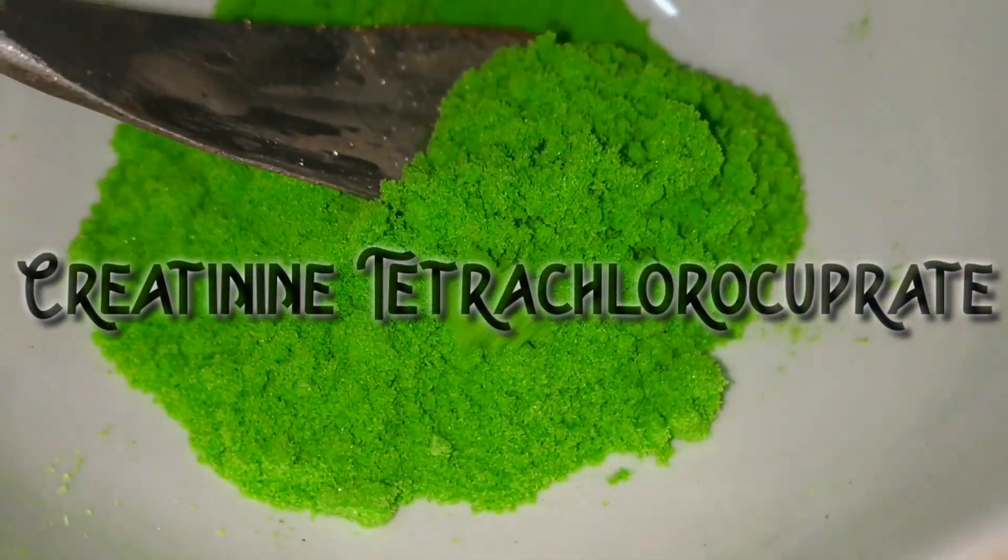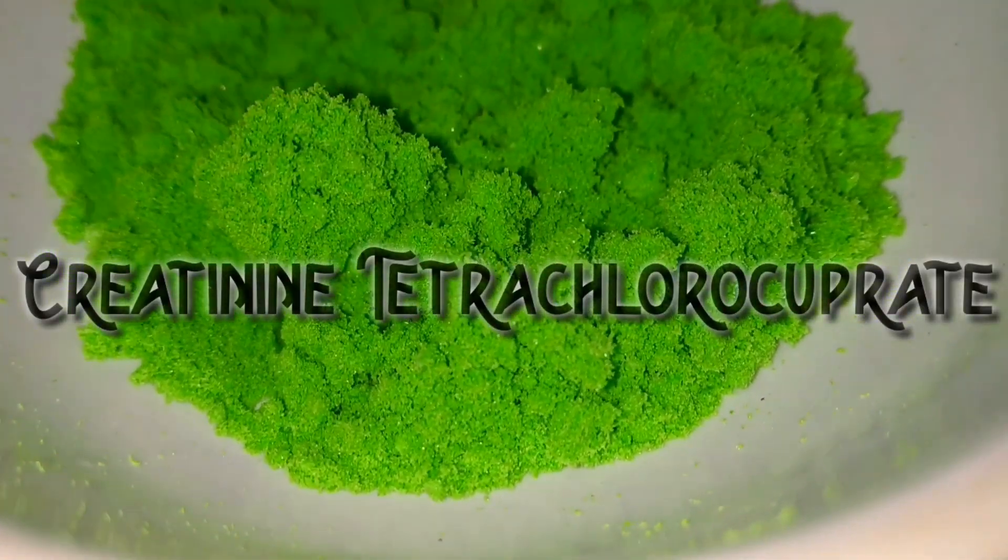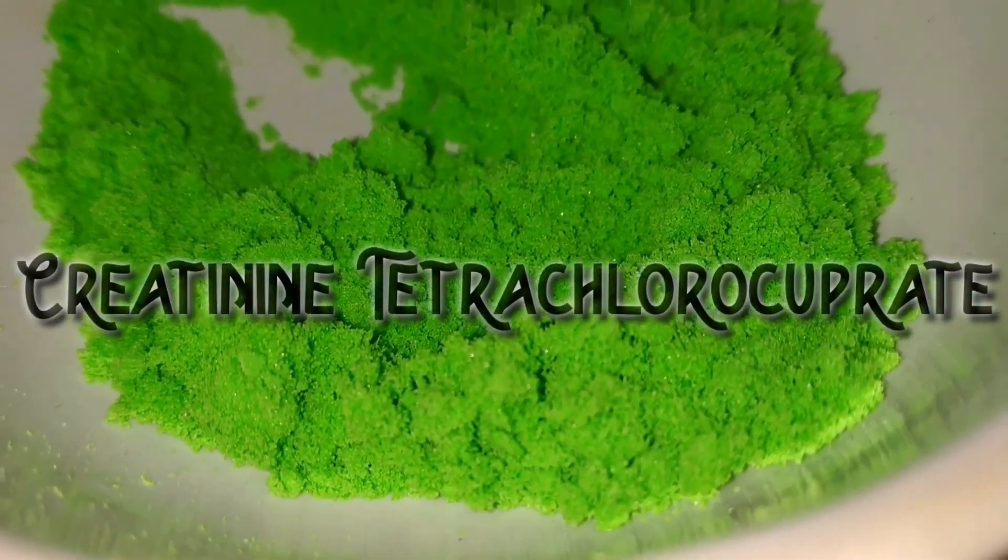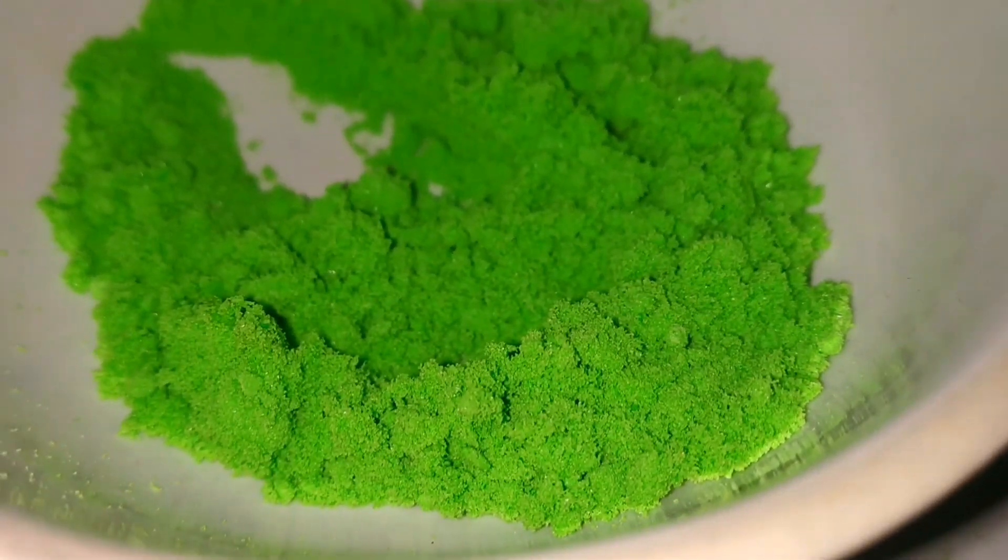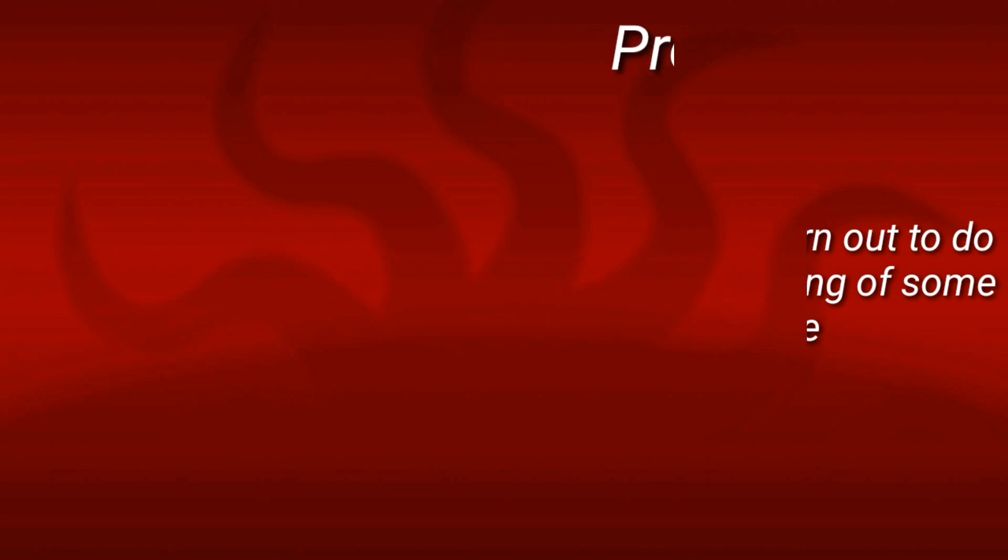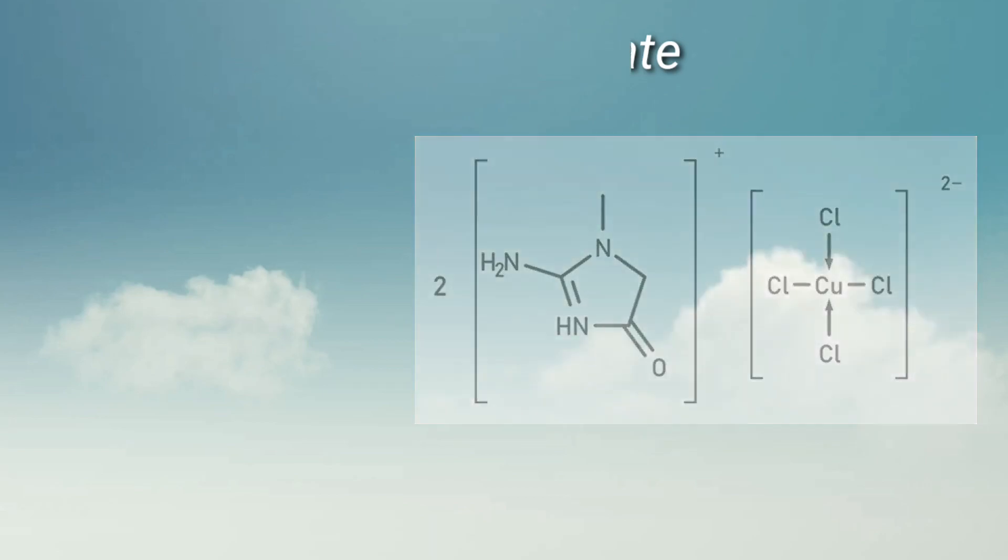Hello friends, in this video we will be synthesizing the coordination compound creatinine tetrachlorocuprate. Creatinine tetrachlorocuprate is a complex containing the coordination entity tetrachlorocuprate(II) anion and two creatinium cations.